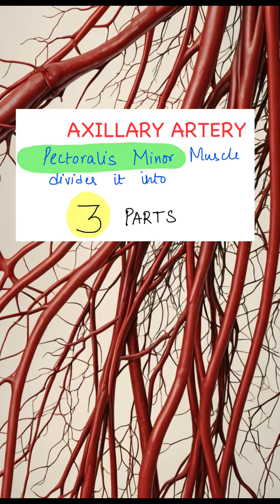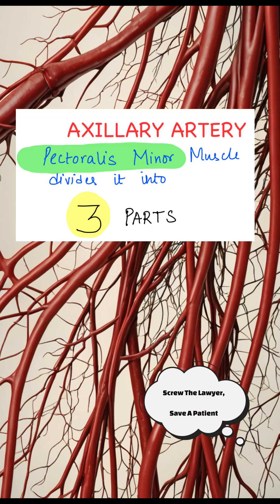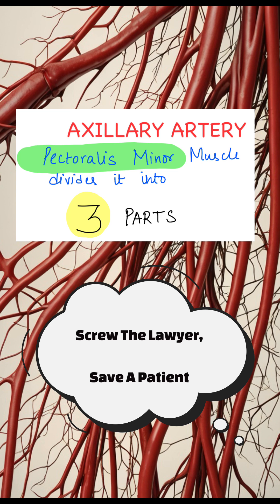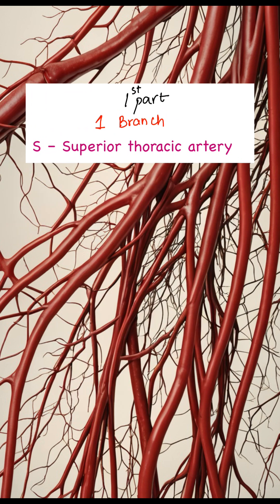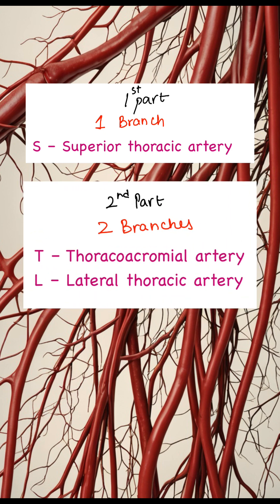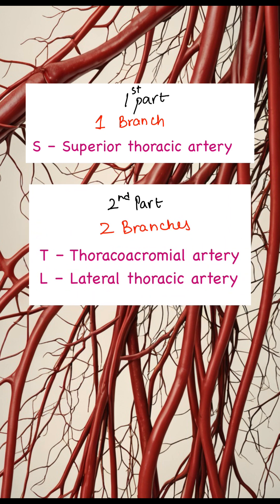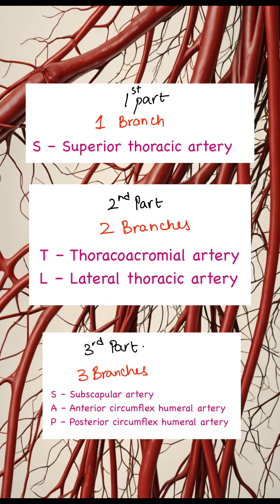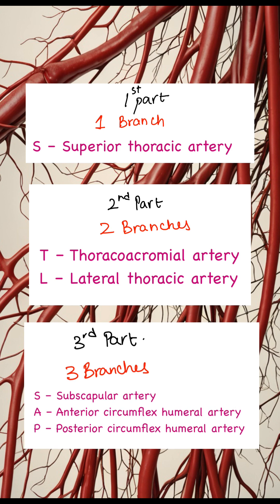Coming to the axillary artery, the pectoralis minor muscle divides it into three parts, which can be remembered by the mnemonic: screw the lawyer, save a patient. The first part gives off one branch — the superior thoracic artery. The second part gives off two branches — the thoracoacromial artery and the lateral thoracic artery. The third part gives off three branches — the subscapular artery, anterior circumflex humeral, and the posterior circumflex humeral artery.